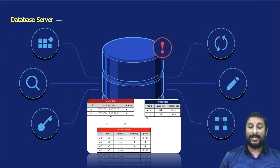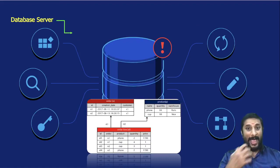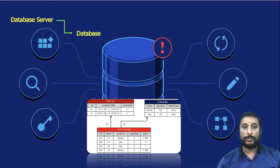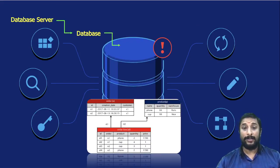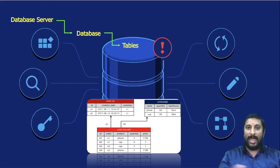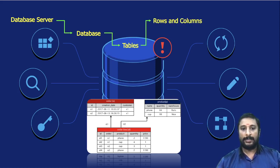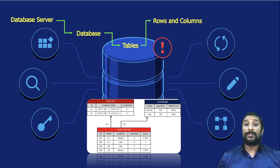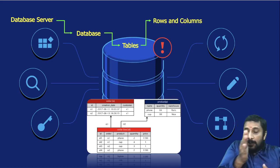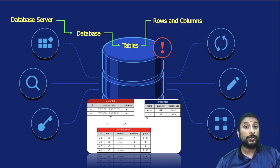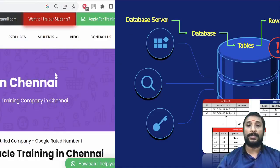If we talk about how the hierarchy of data is stored: you've got the database server, and under that the server will have a lot of databases. Inside those databases, you've got a lot of tables, and the tables will have a lot of rows and columns. This is how the hierarchy of data is stored in the database.